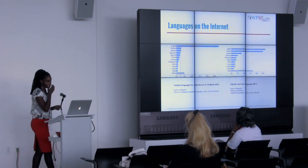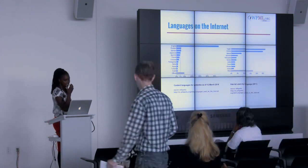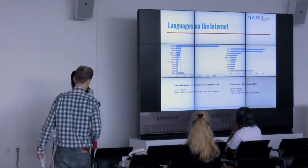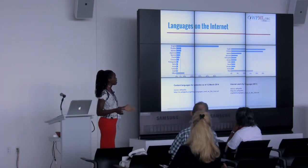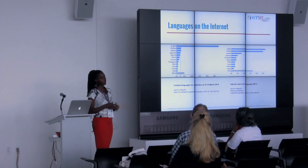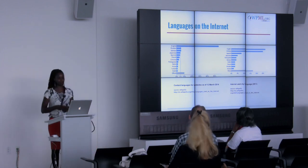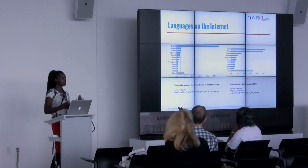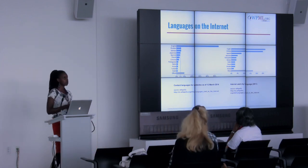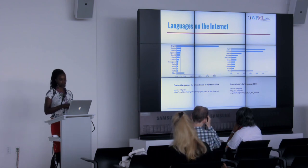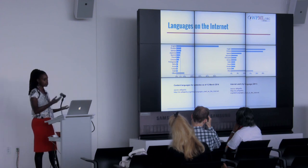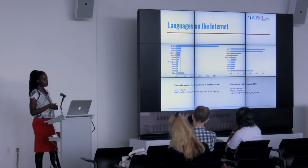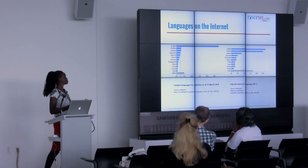So, languages on the internet: English is still the number one language on the internet — English is a global language. But other languages are actually gaining on English, as you can see on the slide. With Russian, German, Japanese, Spanish, and French all growing.